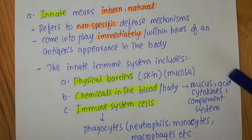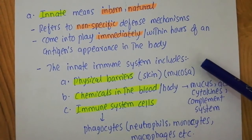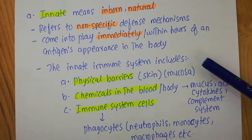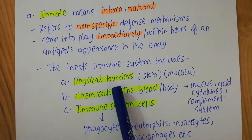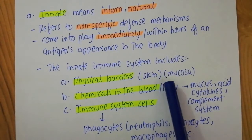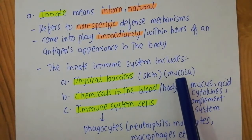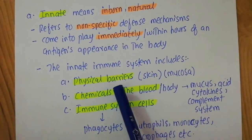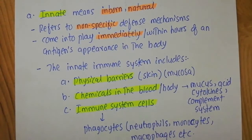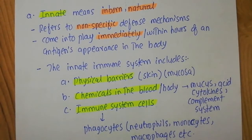The innate immune system includes different things. One important component is the physical barrier, for example the skin or the mucosa present in your body. In this particular video I'll be focusing only on these physical barriers — how they are helpful in defending your body against pathogens.